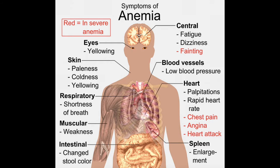Once we have a patient with signs and symptoms of hypoxia, the next discussion becomes how we can prove that they actually have an anemia. Remember that the technical definition of anemia is a decrease in red blood cell mass. Unfortunately, it's very difficult to measure red blood cell mass — we can't simply bleed a patient and measure how much their red blood cells weigh. There are ways to do it, but they would be very expensive and difficult.